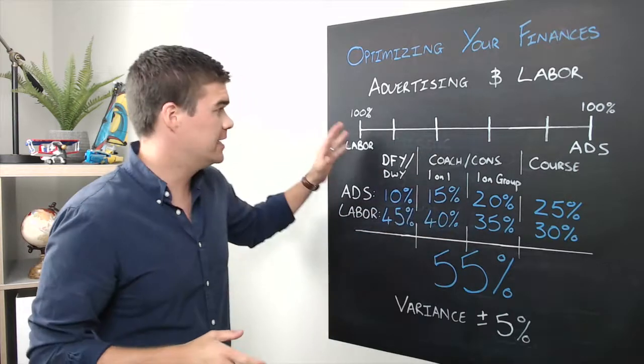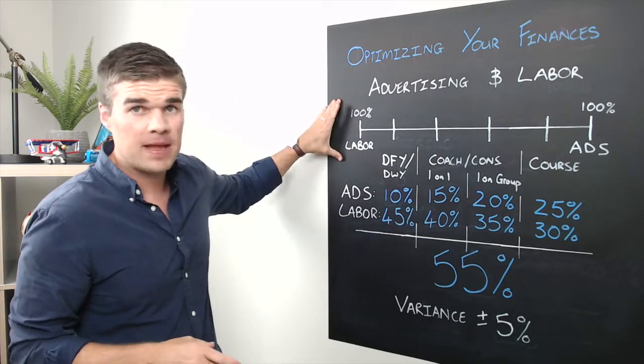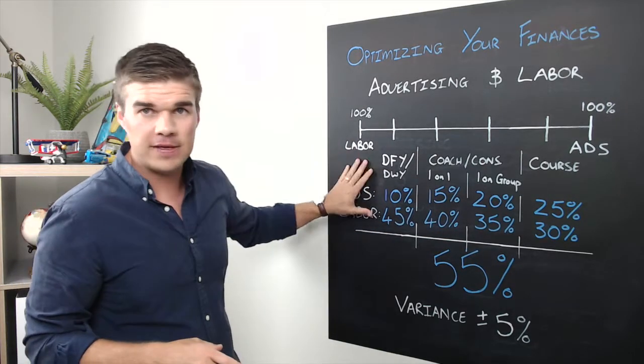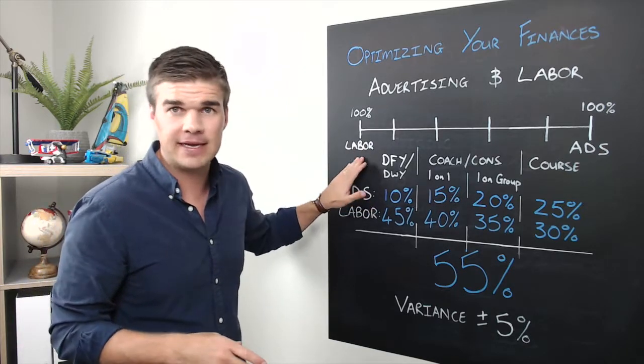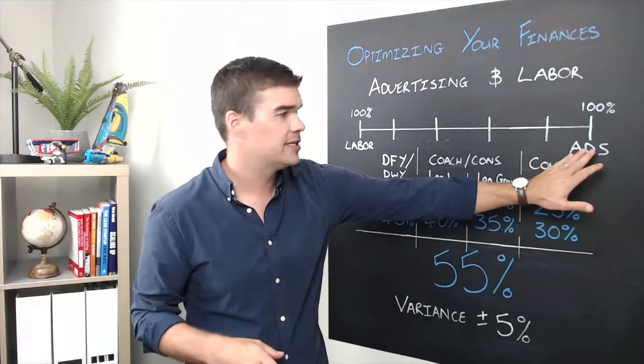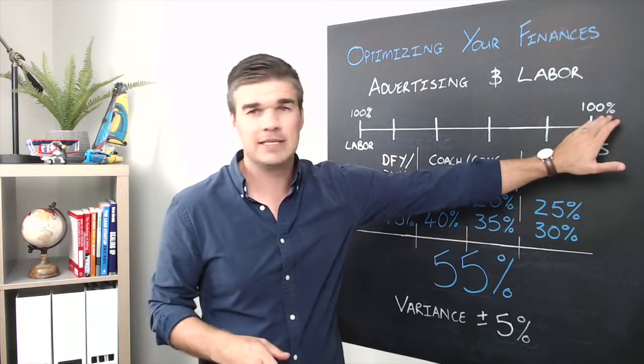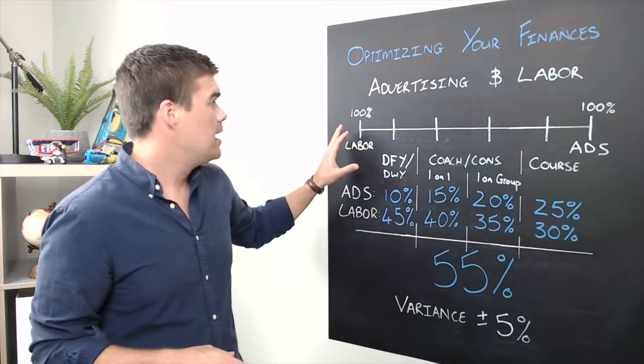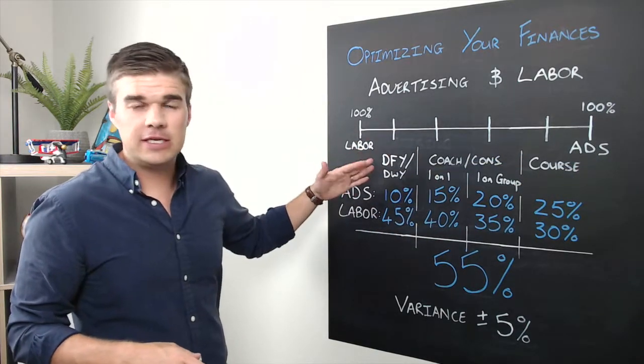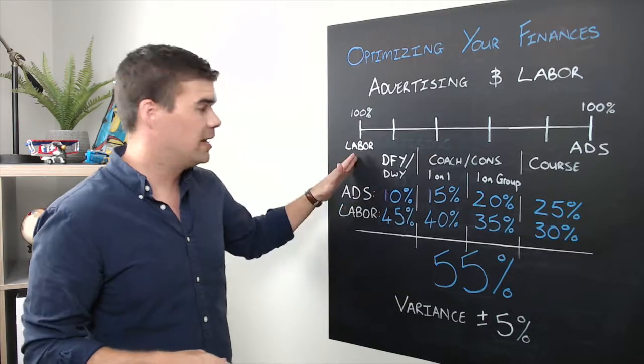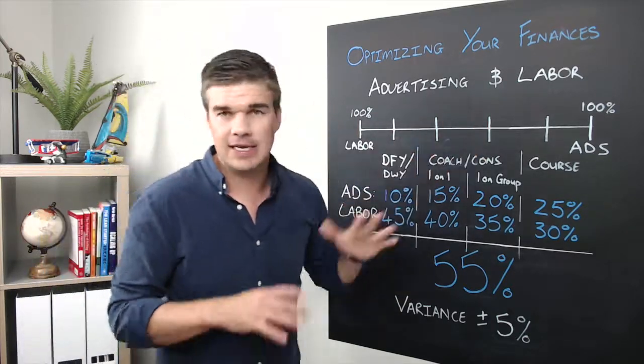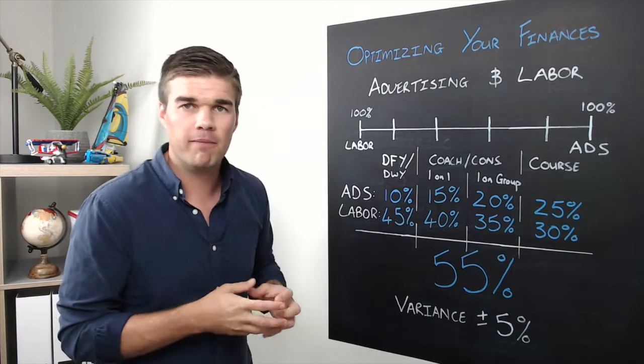So I want to dive into it here. The first thing I have is a scale. This scale is simply on this end there's 100% labor and therefore zero percent advertising, and on the other end there is 100% advertising and zero percent labor. If you're on this side of the scale, you're obviously spending all of that 55% on labor and nothing on advertising, which is not realistic in any of these business models. You need to have some form of both.